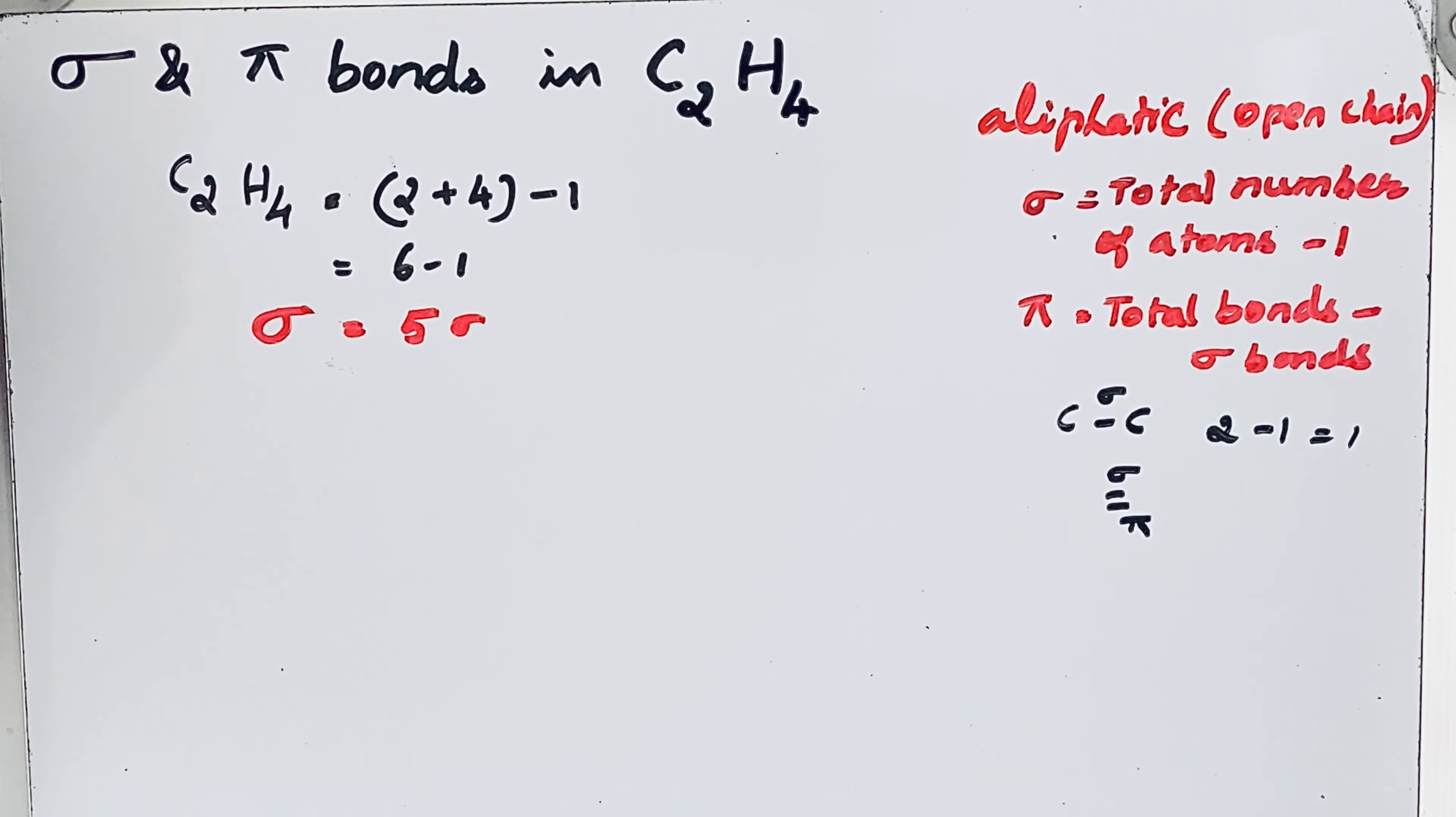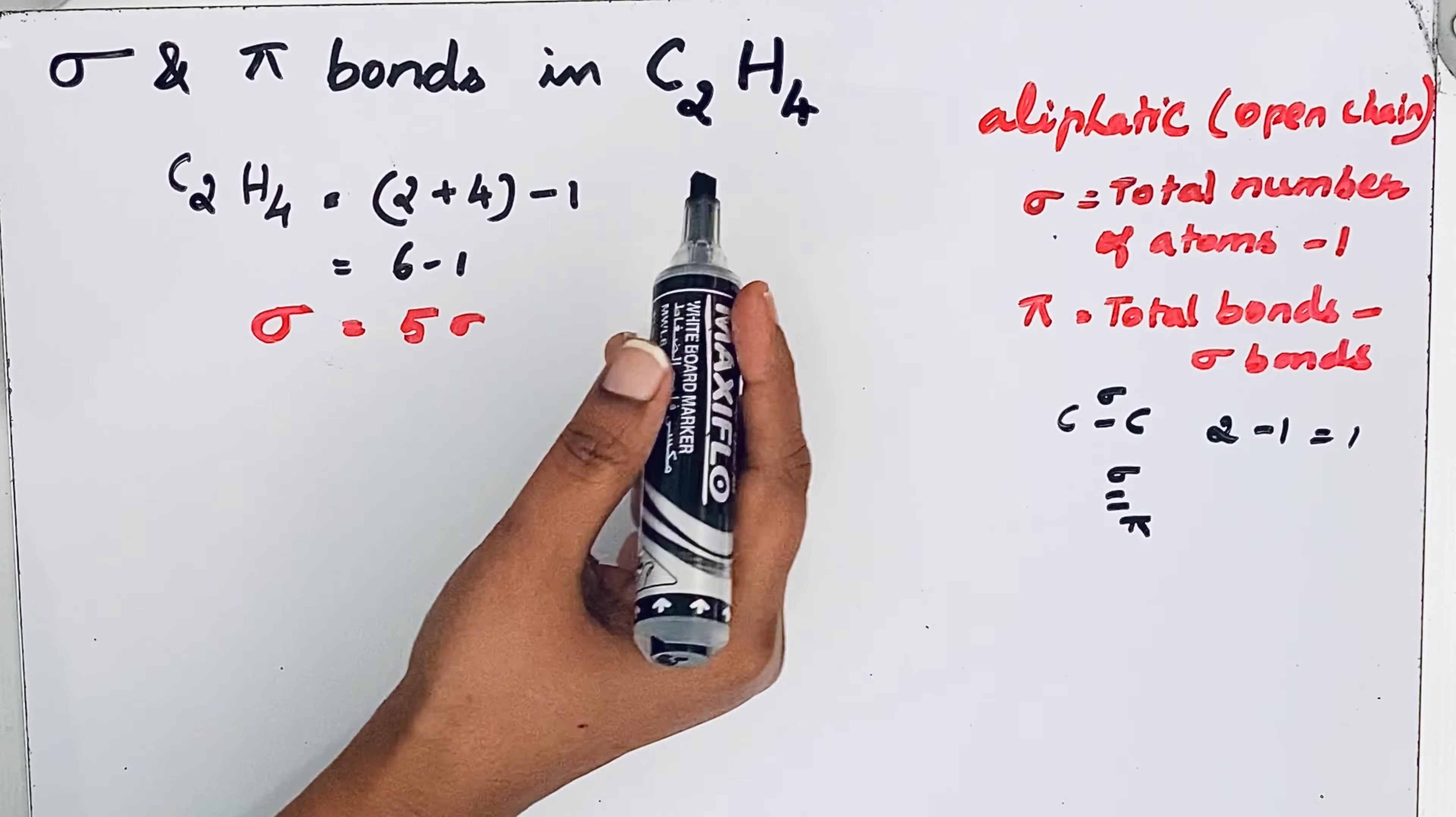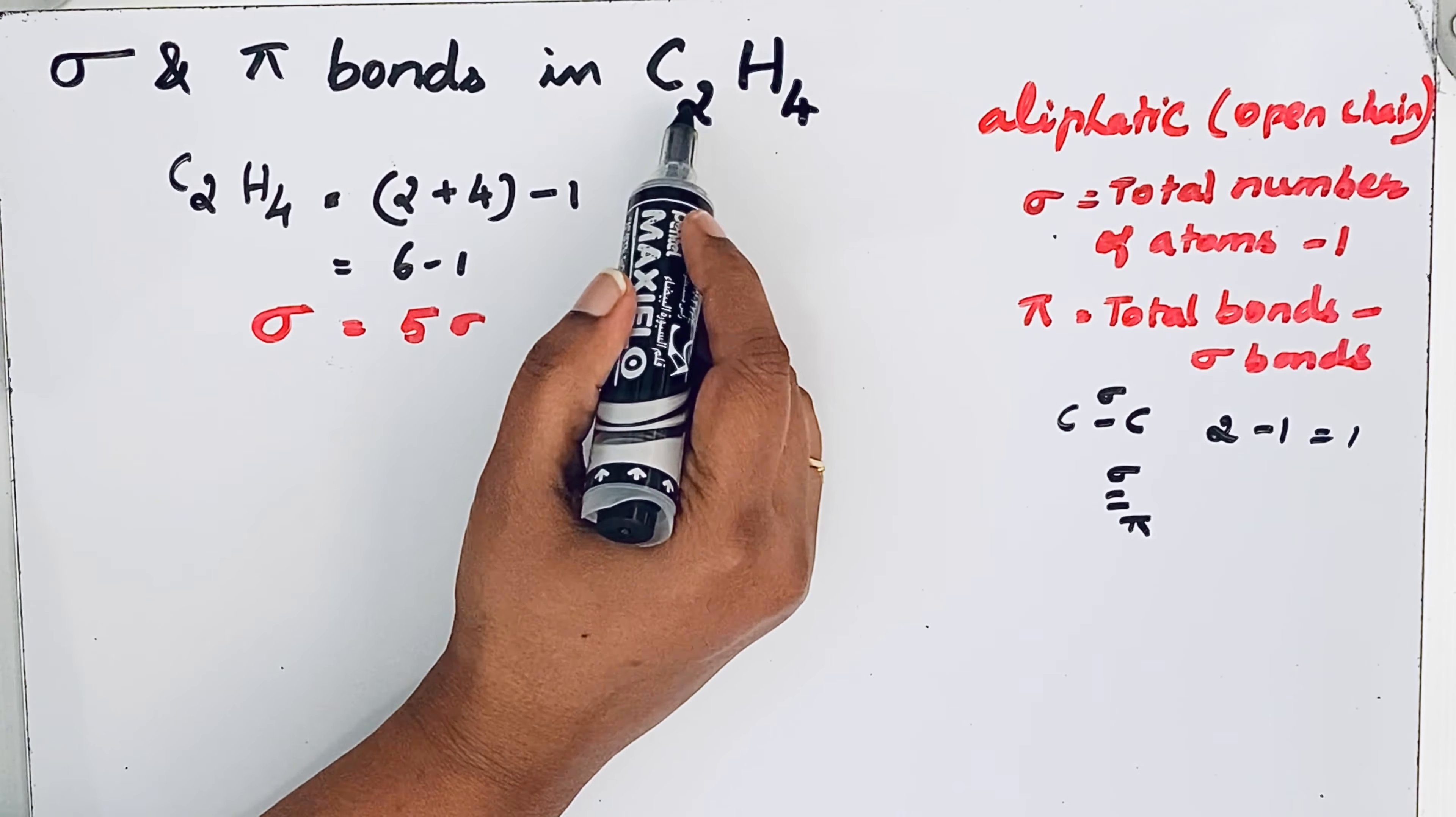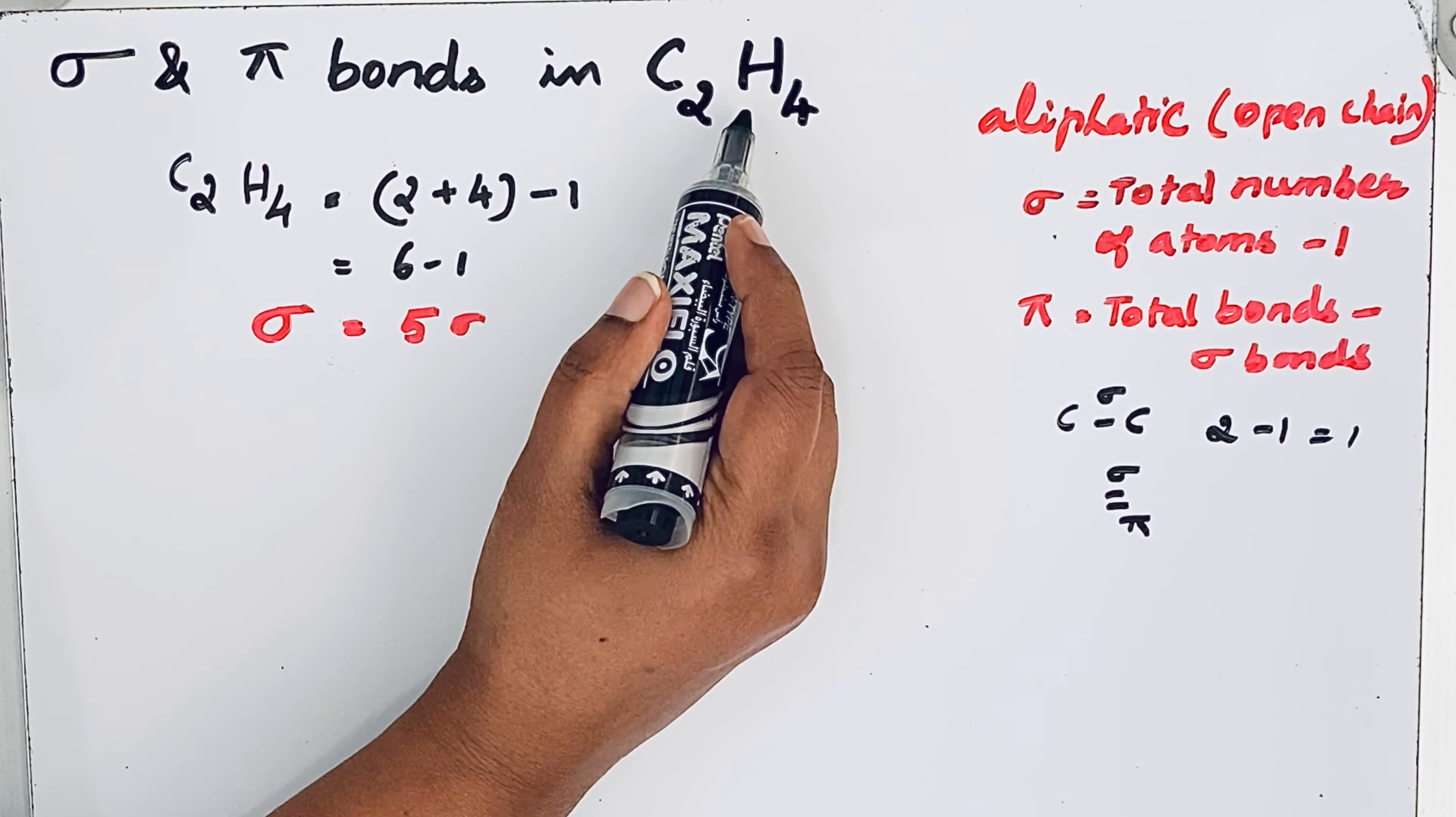Now we can find the pi bonds. To find the pi bonds, we should know the structural formula for C2H4. Whenever the number of hydrogen atoms is double the carbon atoms, it is an alkene. That means there is the presence of a double bond.